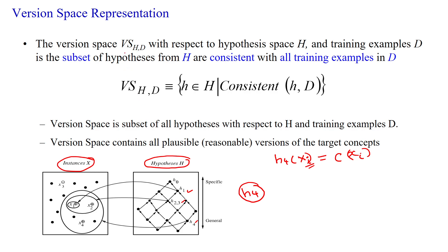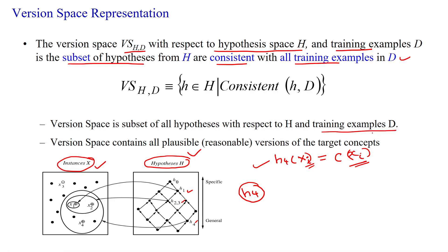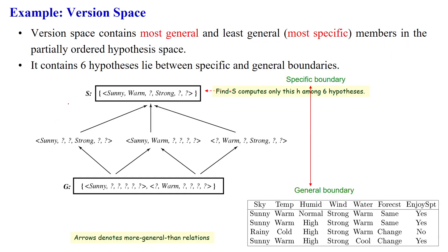The version space is defined with respect to hypothesis space H and given training examples D as the subset of hypotheses from H that are consistent with all the training examples in dataset D. All training examples should be satisfied by hypothesis h4, then only we can say h4 is consistent with respect to given training examples D. The version space will contain all plausible versions of the target concept.